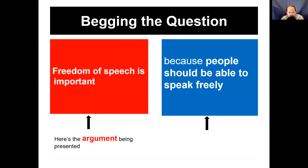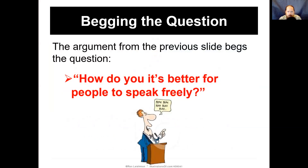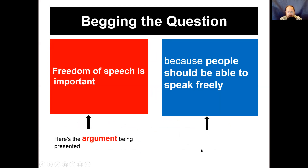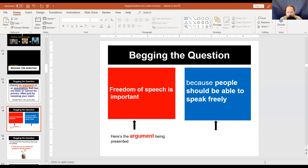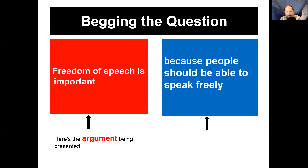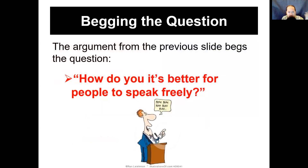Example: Freedom of speech is important because people should be able to speak freely. Well, you're not saying why freedom of speech is important — you're just kind of saying it is. You're saying freedom of speech is important because freedom of speech is important. That's not offering proof; you're just repeating yourself. Freedom of speech is important because speaking freely is important — that's not evidence, it's just restating it in a different way.